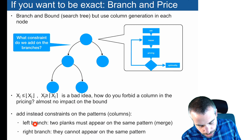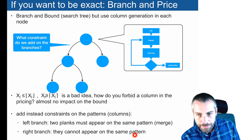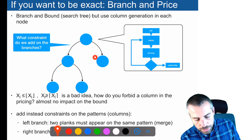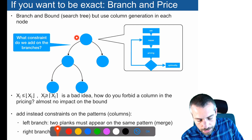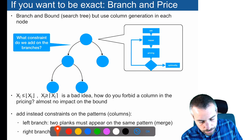Instead, what we will do is add constraints so that, for instance, two planks must appear on the same pattern. We will need to merge some patterns, and on the right branch we will say that they cannot appear on the same pattern. This is the type of constraint we add to split the solution space in two for each node explored during branch and price. Column generation is the solving process in each node, and when we split the search space, this is why it's called branch and price.